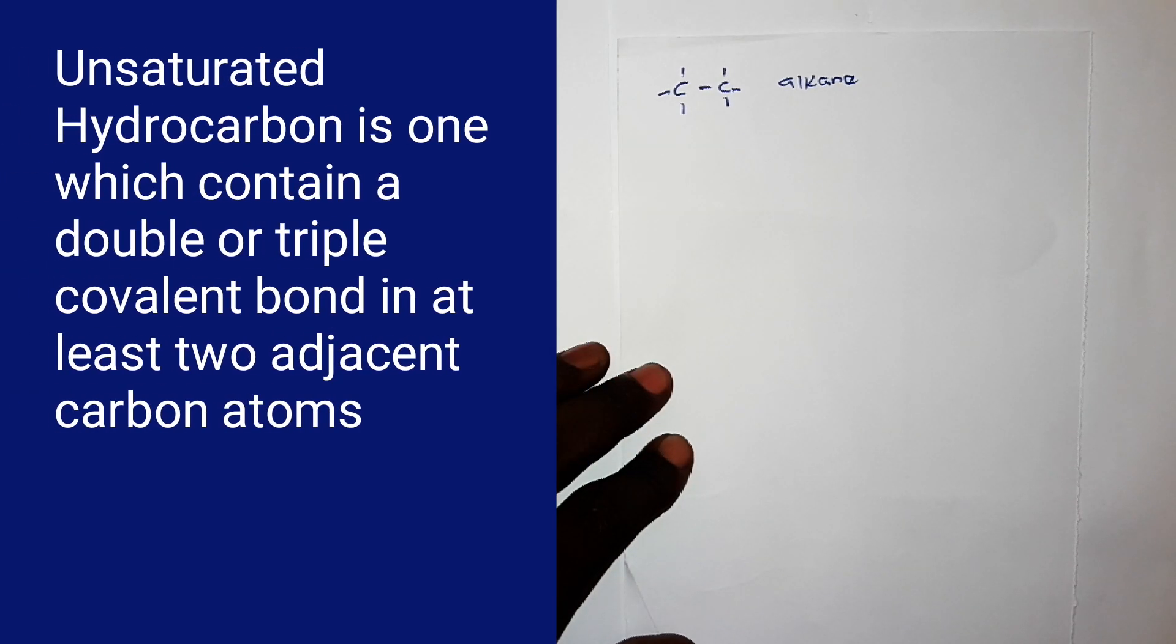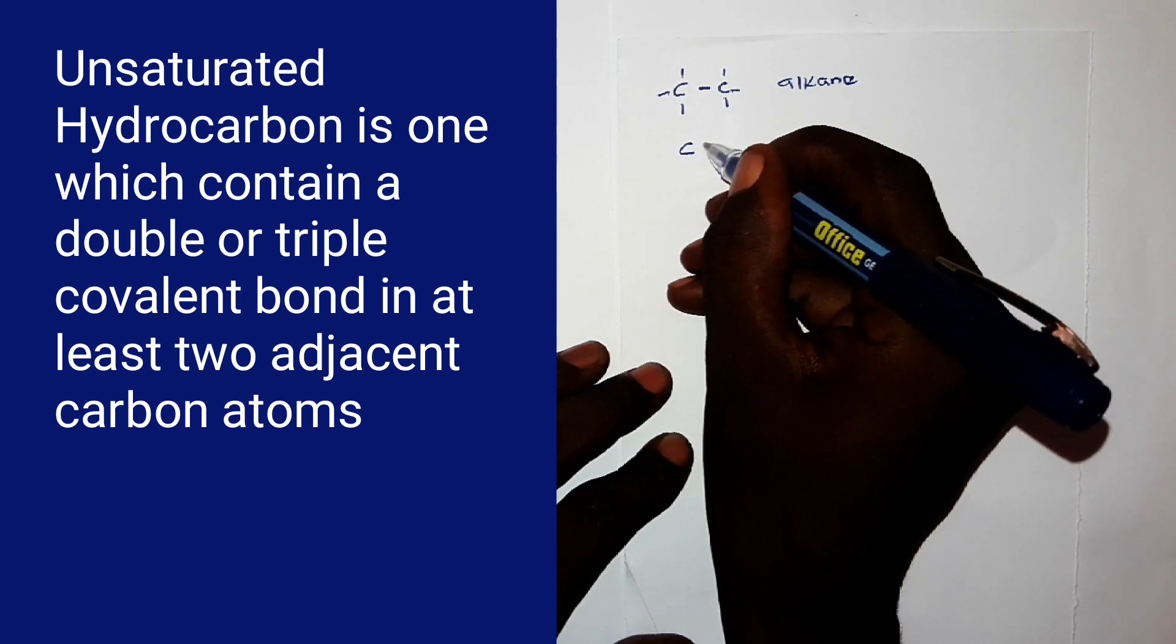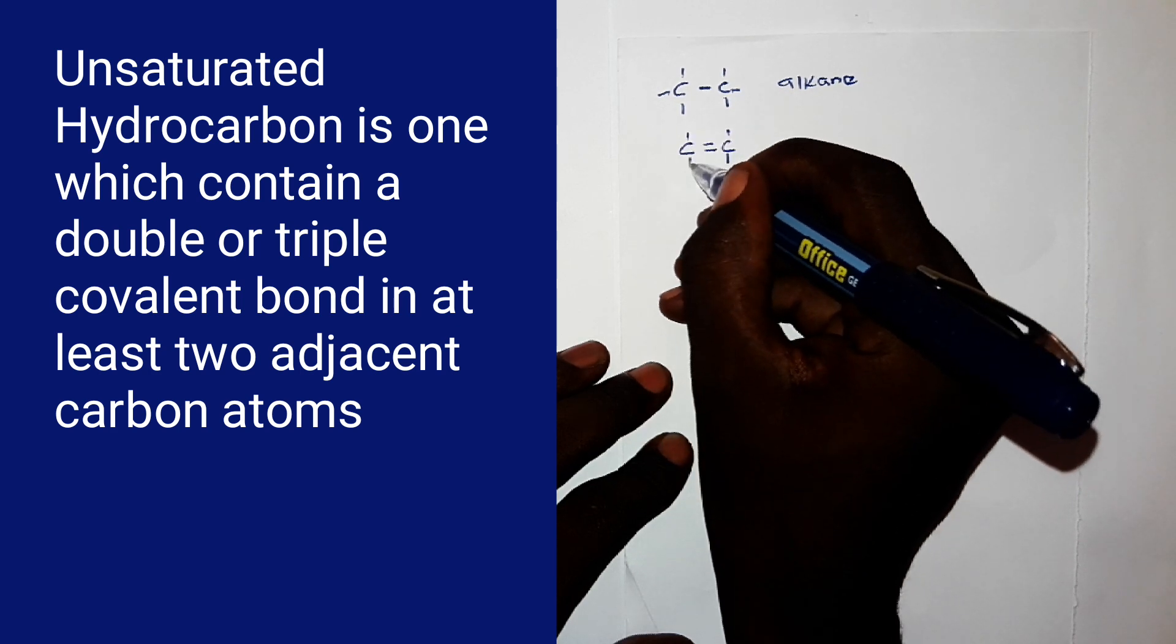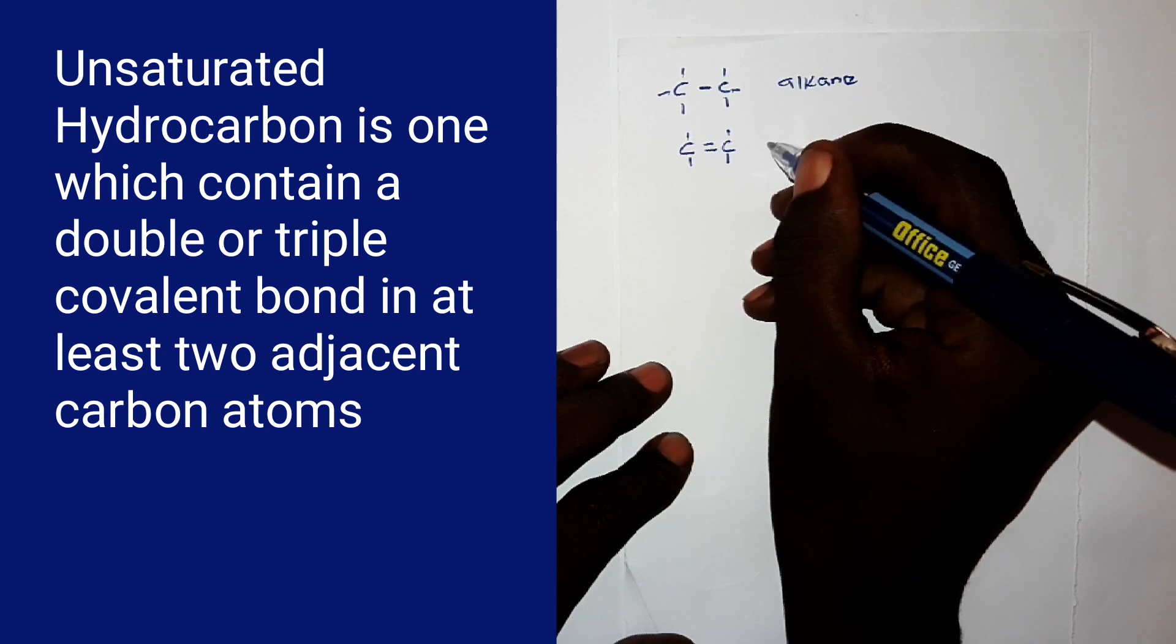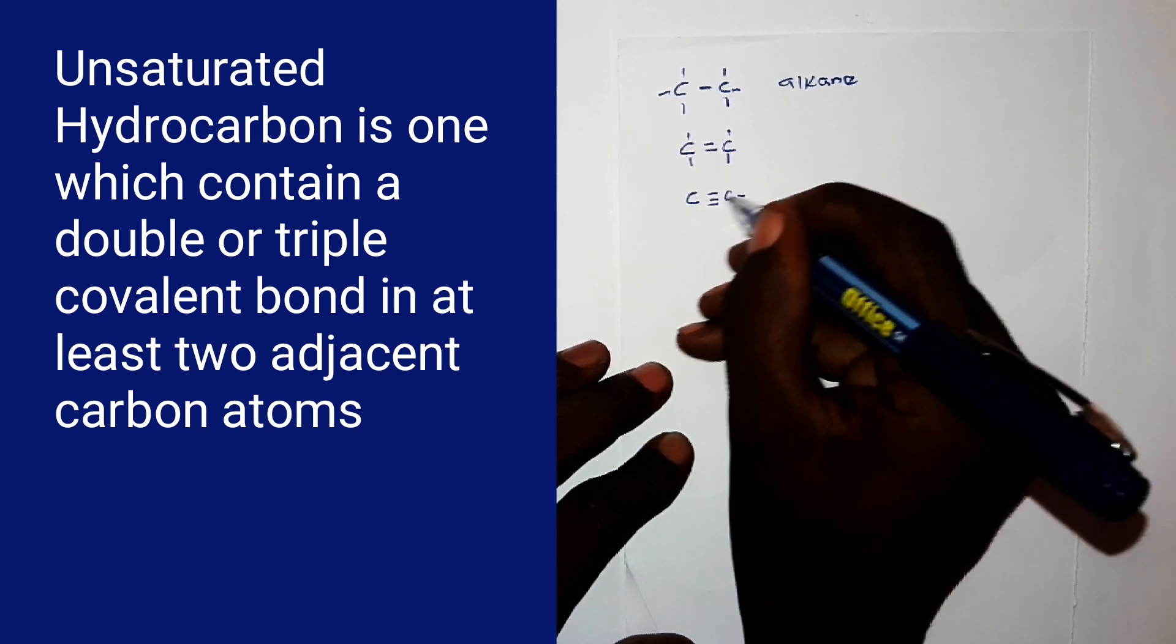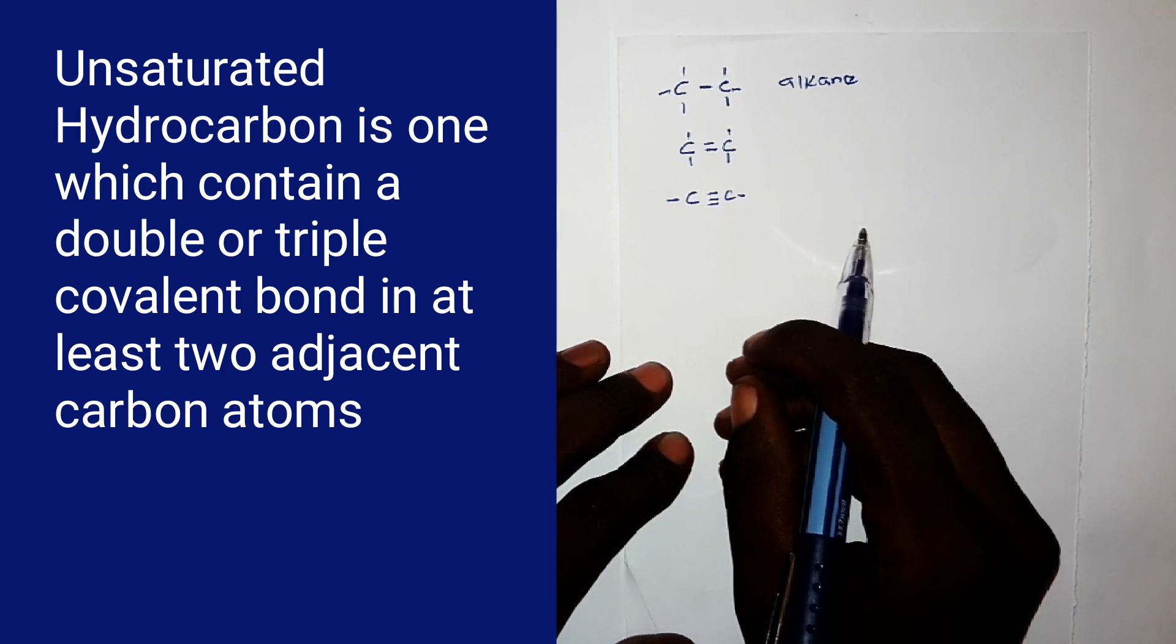Unsaturated hydrocarbons are those which contain double or triple covalent bonds in at least two adjacent carbon atoms, as shown below. This is a carbon atom, then you have a double bond here, then you make a line here and here, to make four bonds in each carbon atom. An example here, then you also have a triple bond. A triple bond. So, these are examples of what we call unsaturated hydrocarbons.